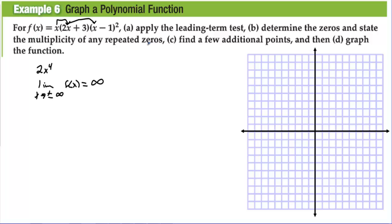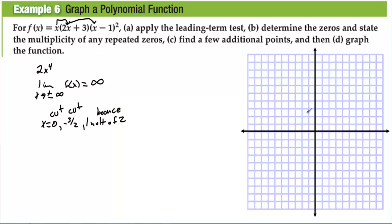Determining zeros and their multiplicities: x = 0 with multiplicity 1; x = −3/2 with multiplicity 1; and x = 1 with multiplicity 2, since that factor appears twice. A multiplicity of 2 means the graph bounces off the x-axis at that zero, while an odd multiplicity like 1 means the graph cuts through that point.